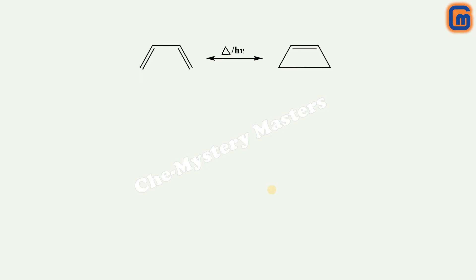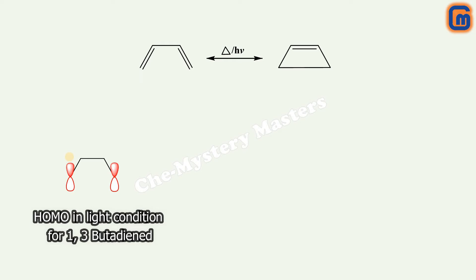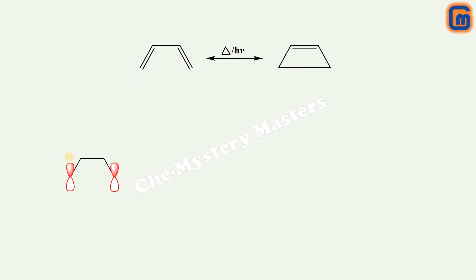For 1,3-butadiene molecular orbitals, there are four atomic orbitals which combine to make four molecular orbitals. These four molecular orbitals have different HOMO and LUMO depending on the reaction conditions. In a thermal reaction, psi 2 acts as the HOMO, while in a photochemical reaction psi 3 star becomes the HOMO — also sometimes known as the SOMO, or singly occupied molecular orbital. Here, when discussing sigma bond formation and cyclic structure formation, we are considering the photochemical HOMO.